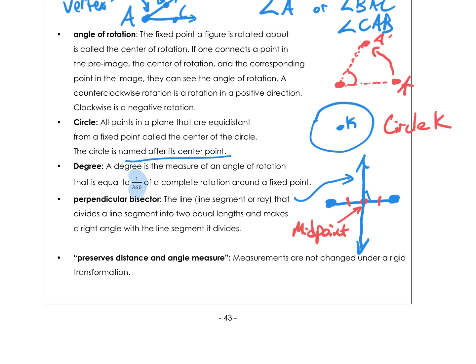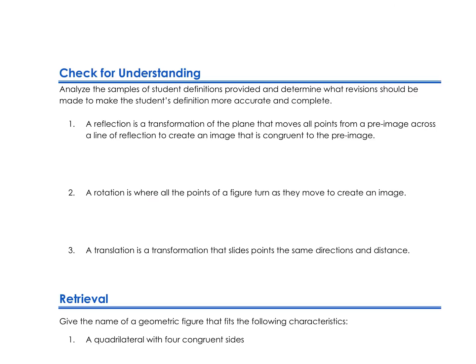We're going to talk about preserving distance and angle measures — that's what happens when we do these rigid transformations. The shape doesn't change; the lengths and the angle measures are the same. So let's think about these definitions and analyze samples of student definitions to determine what revisions should be made to make them more accurate and complete.